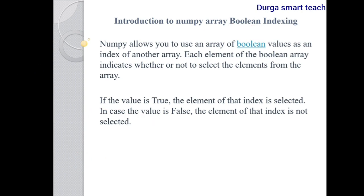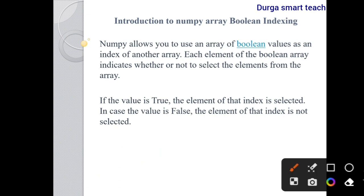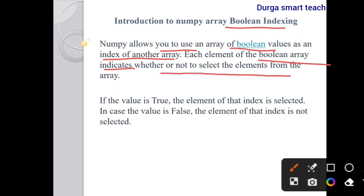So here we are talking about boolean indexing. Normally if you want to access elements from an array we can use indexing or slicing. But in this case we are using boolean indexing to access the elements — using boolean values as the index.